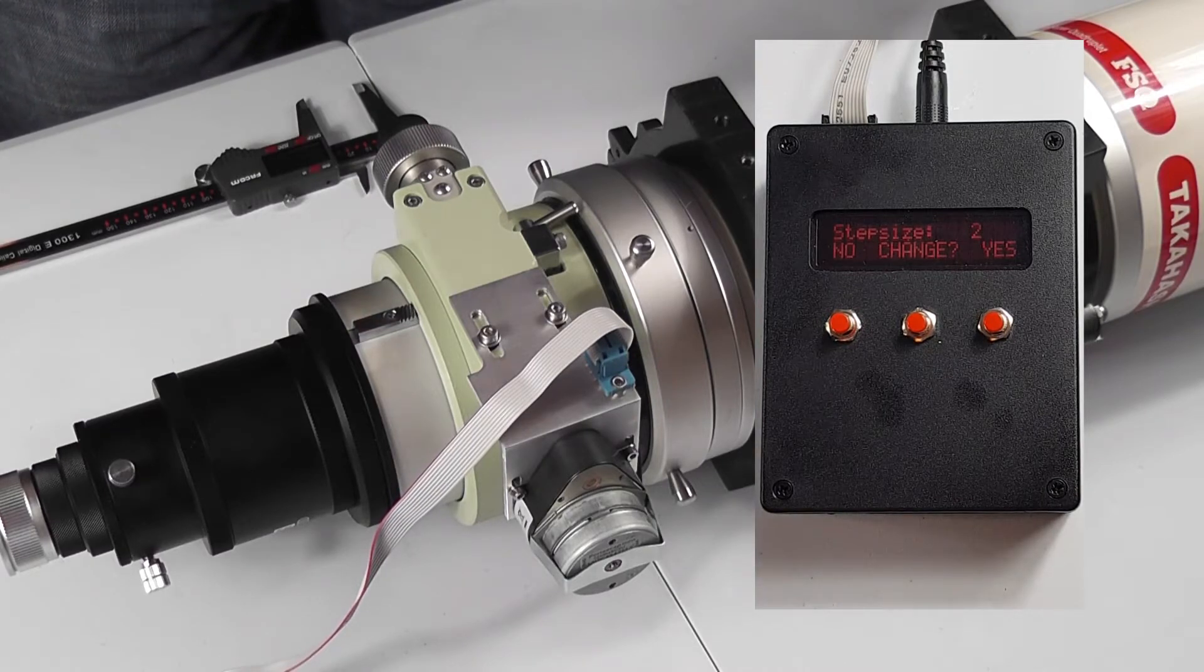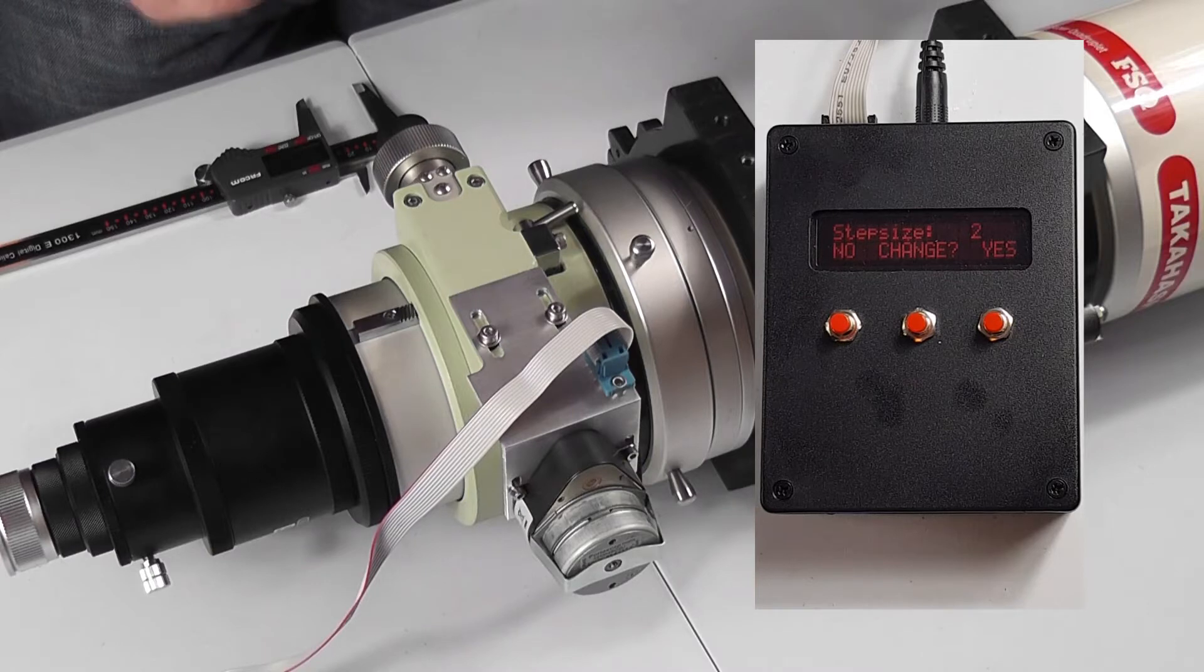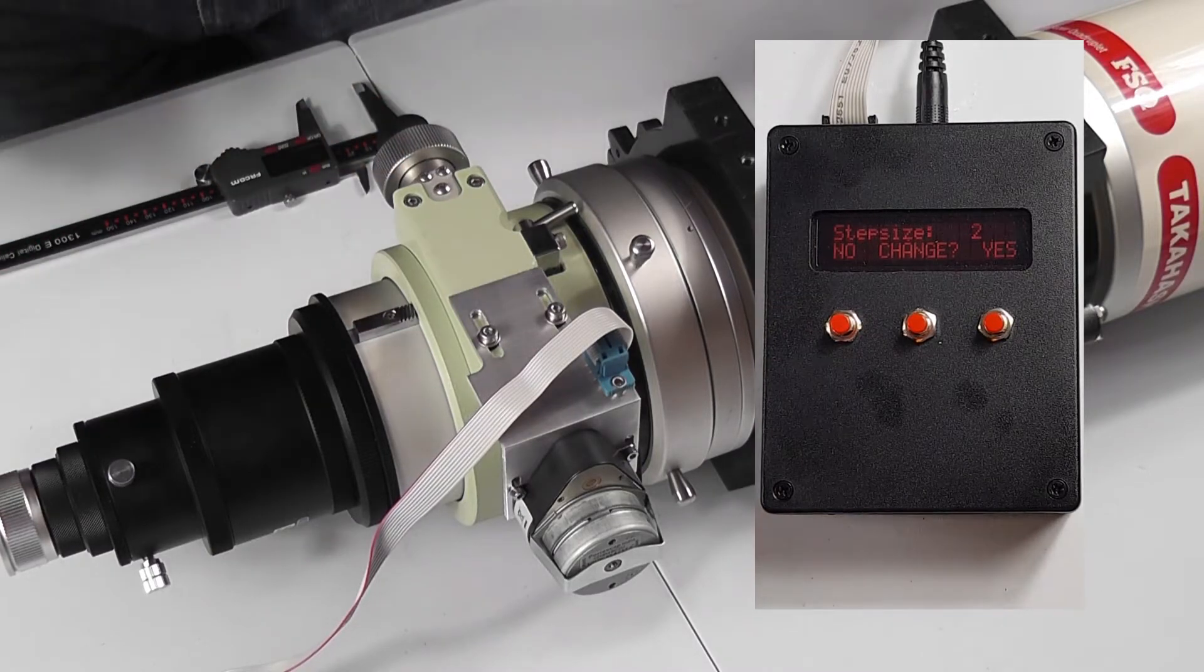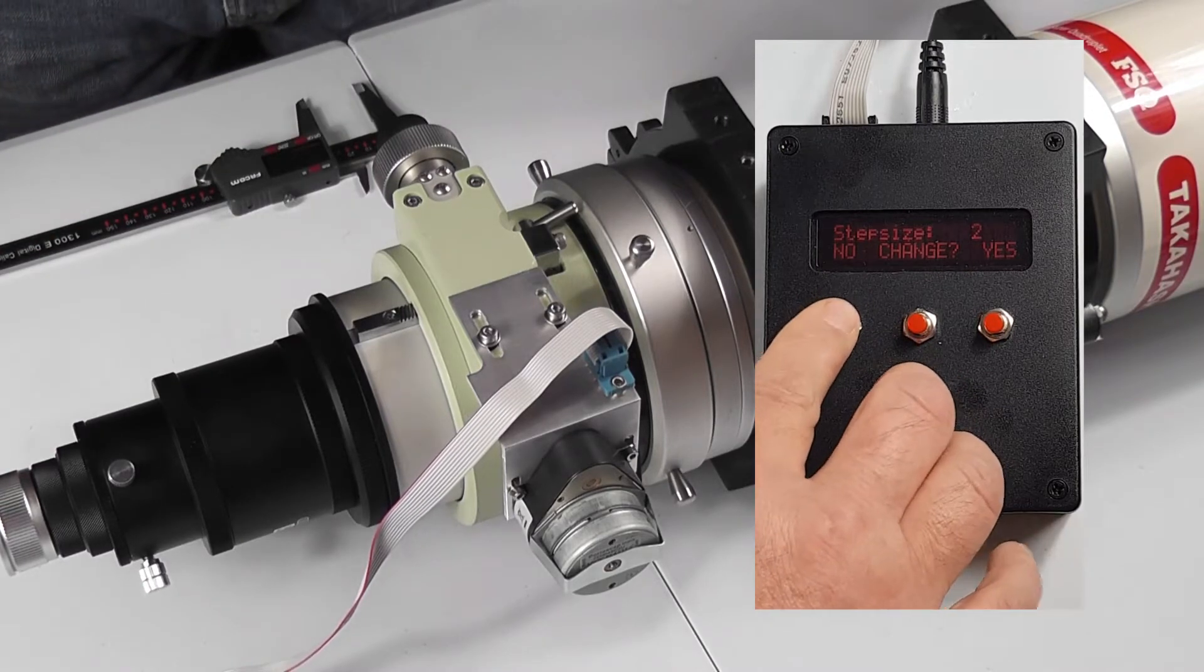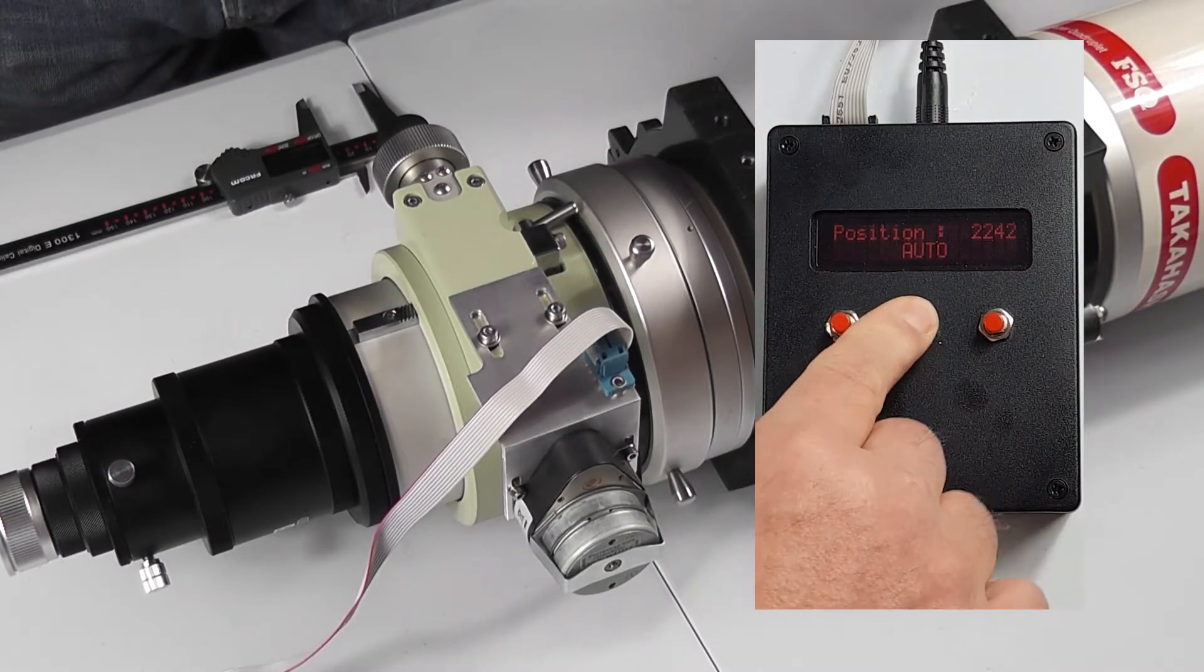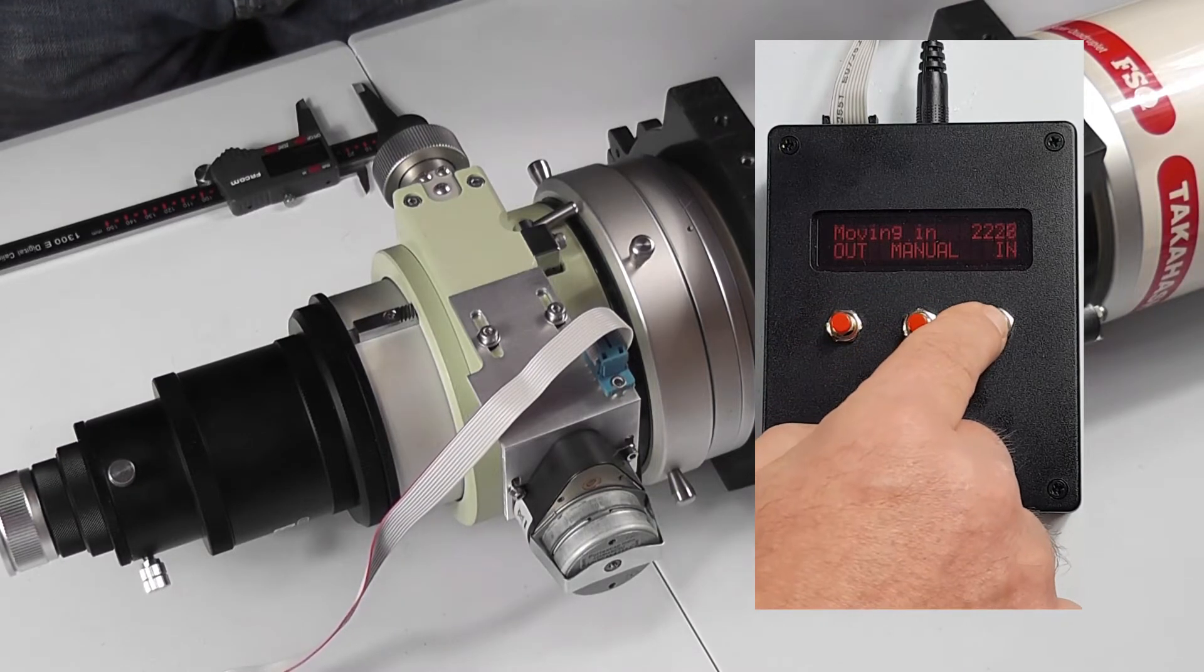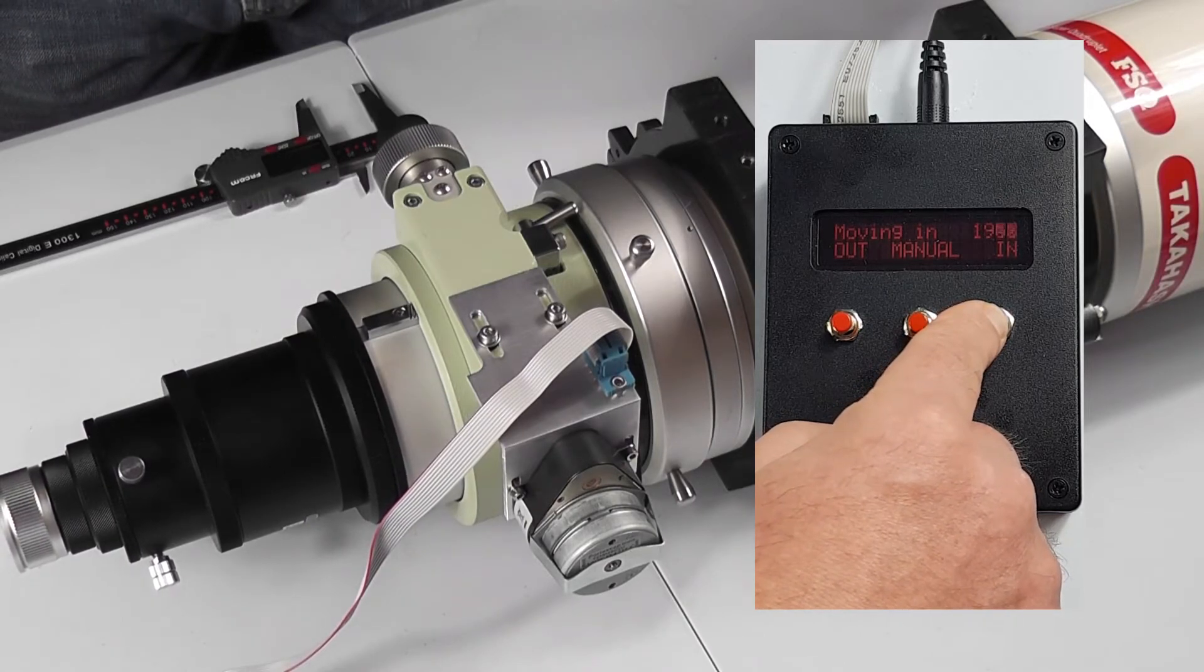So if you increase the step size, instead of being 26,000 it will be 13,000. So play around with the step size and get it to a point that suits you. And for the Tak here, step size two is absolutely ideal. And you can see there if I go back to the manual, you can see the speed and it runs out quite reasonably. It's only a short focuser.